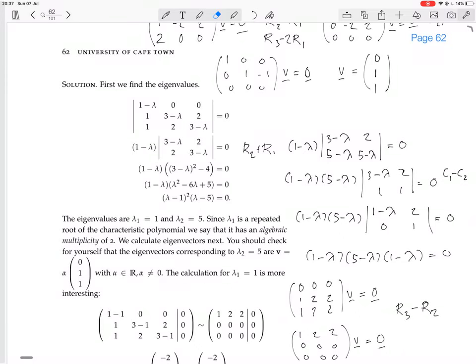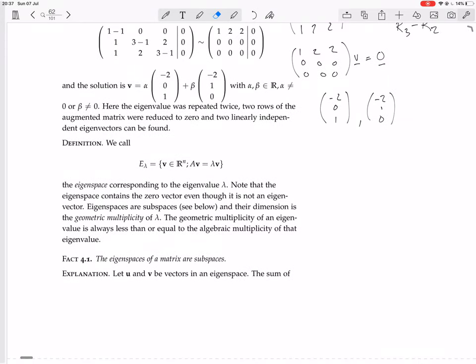So I think we're going to go about here. Yeah, okay. So we call this E thing called E lambda, the set of all those vectors such that AV equals lambda V. So the set of all eigenvectors for the eigenvalue lambda, we call this set the eigenspace corresponding to the eigenvalue lambda. Note that the eigenspace contains the zero vector even though it is not an eigenvector.